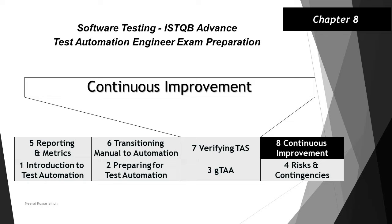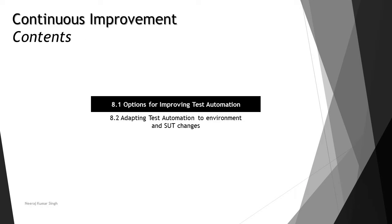Hello friends and greetings for the day. Welcome back to the tutorial on ISTQB Advanced Test Automation Engineer. We are now looking at the last chapter of this certification, that is continuous improvement. As part of this chapter, we'll be covering two topics: 8.1 options for improving the test automation, and 8.2 adapting test automation to environment and SUT changes. In this tutorial, we are talking about the first topic, 8.1 options for improving test automation.